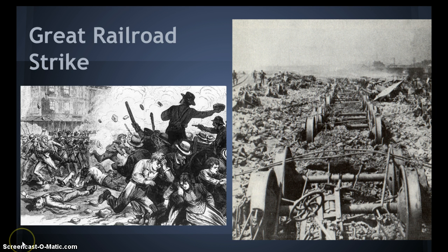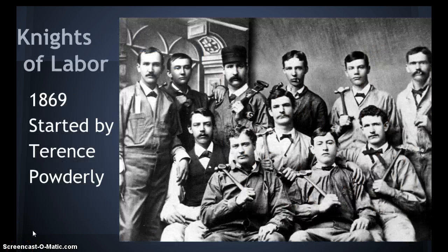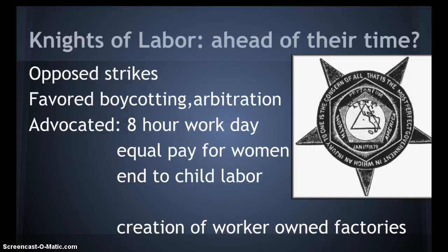Unions are not getting a good reputation from this incident. One of the early unions is the Knights of Labor — formed in 1869 by Terence Powderly. They opposed strikes and favored boycotting and arbitration. Arbitration is where a third party helps negotiate. Their goals included advocating for an eight-hour workday, equal pay for women, an end to child labor, and a creation of worker-owned factories.